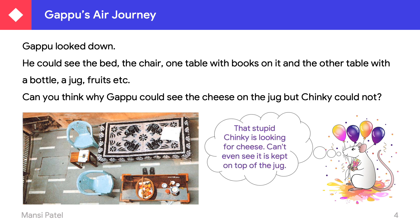This cheese Guppu could see, but Chinky could not. Guppu said, 'Stupid Chinky is looking for cheese but can't even see it — it is kept on top of the jug!' Why could Chinky not see it? Because Guppu had gone up with the balloon, so he could see everything from above, but Chinky was on the floor and too tiny to see the cheese on top of the jug.